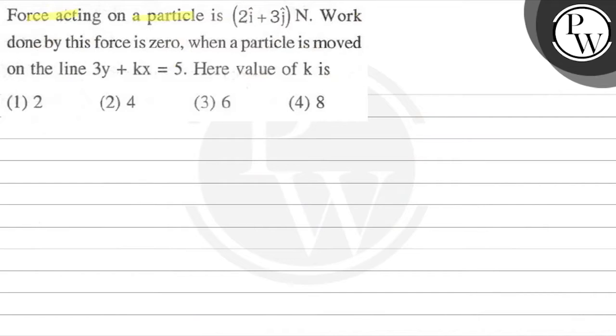Force acting on a particle is (2i + 3j)N. Work done by this force is zero when the particle is moved on the line 3y + kx = 5. Here value of k is...